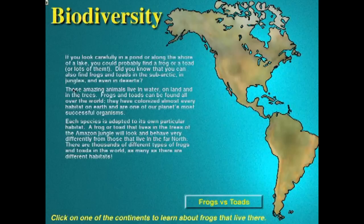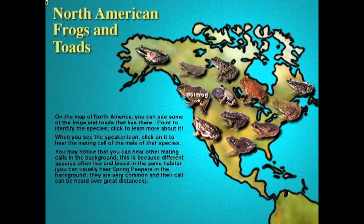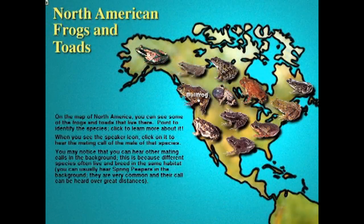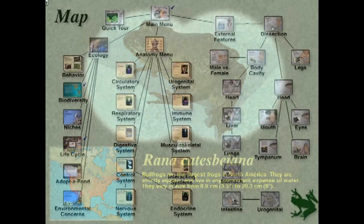Here's another favorite of mine. Visiting North America, we could learn about any of these different species of frogs. Here's the world famous bullfrog — we're looking at him or her through binoculars. Here's a map of the species' geographic distribution and their vital statistics. They get up to about eight inches in length. And here's what they sound like. I love Digital Frog's ecology section because it reminds students that these animals are alive. Biology is the study of life, not dead things. And living frogs make a lot of noise.